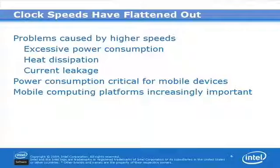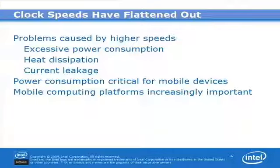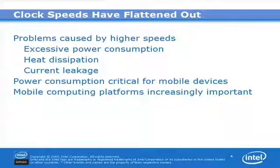So why have clock speeds flattened out? With higher speeds come different problems. One is excessive power consumption — it takes more power to drive a processor faster and faster. There's also heat dissipation: running more current through a processor generates more heat that must be managed. And as you put more power into a processor, the linkage between wires increases, making you less efficient. For mobile devices like laptops and netbooks, power consumption has become a critical factor, as mobile computing platforms are becoming increasingly important.